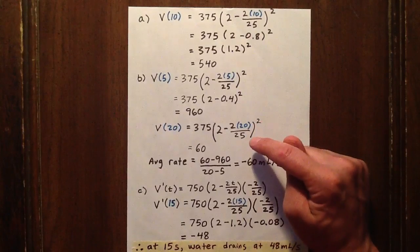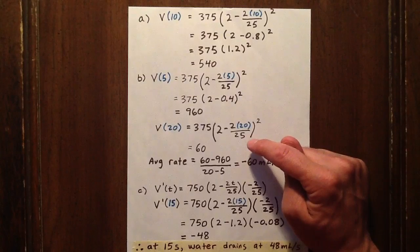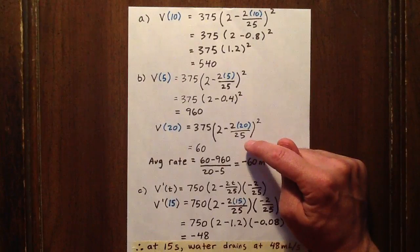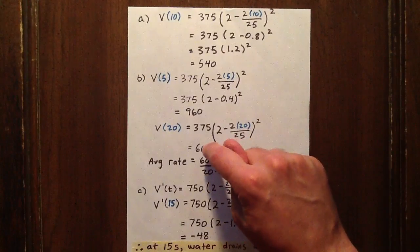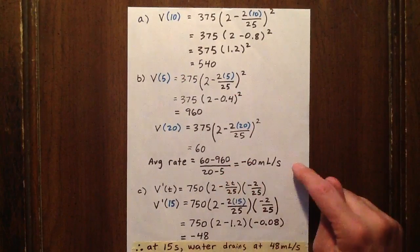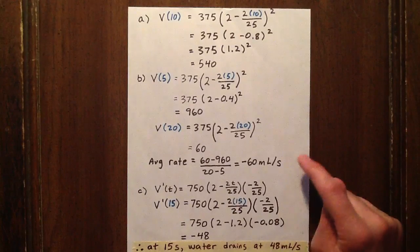How much is left in the cup after 20 seconds? Well, clearly there will be less because the water is draining from it, and we see that there's only 60 milliliters left. Now, the average rate of change is simply Y2 minus Y1 over X2 minus X1, and we get negative 60 milliliters per second as our average rate of change.